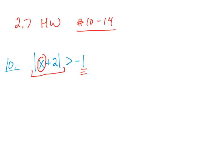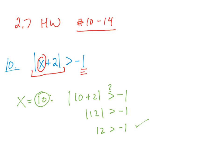Let's pick a few x values and see what happens. If x is 10, we plug in 10 and get absolute value of 12 greater than negative 1. That's true, so x equals 10 works. If x is 0, we get absolute value of 2 greater than negative 1. 2 is greater than negative 1, so x equals 0 works too.